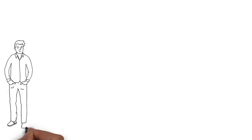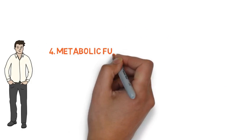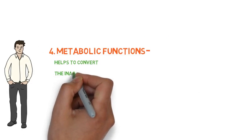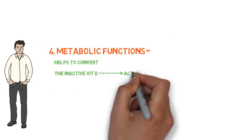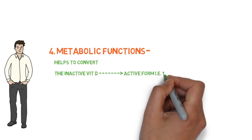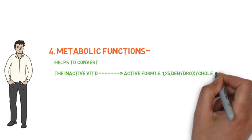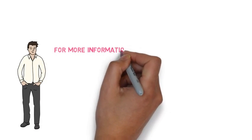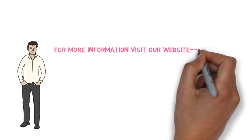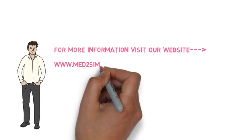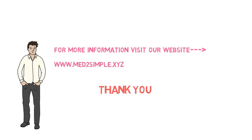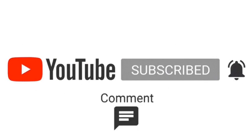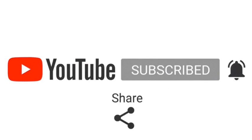Number four, the last function, is metabolic function. The kidney helps to convert inactive vitamin D to the active form, which is 1,25-dihydroxycholecalciferol. For more information, please visit our website at medtosimple.xyz. Thank you for watching.